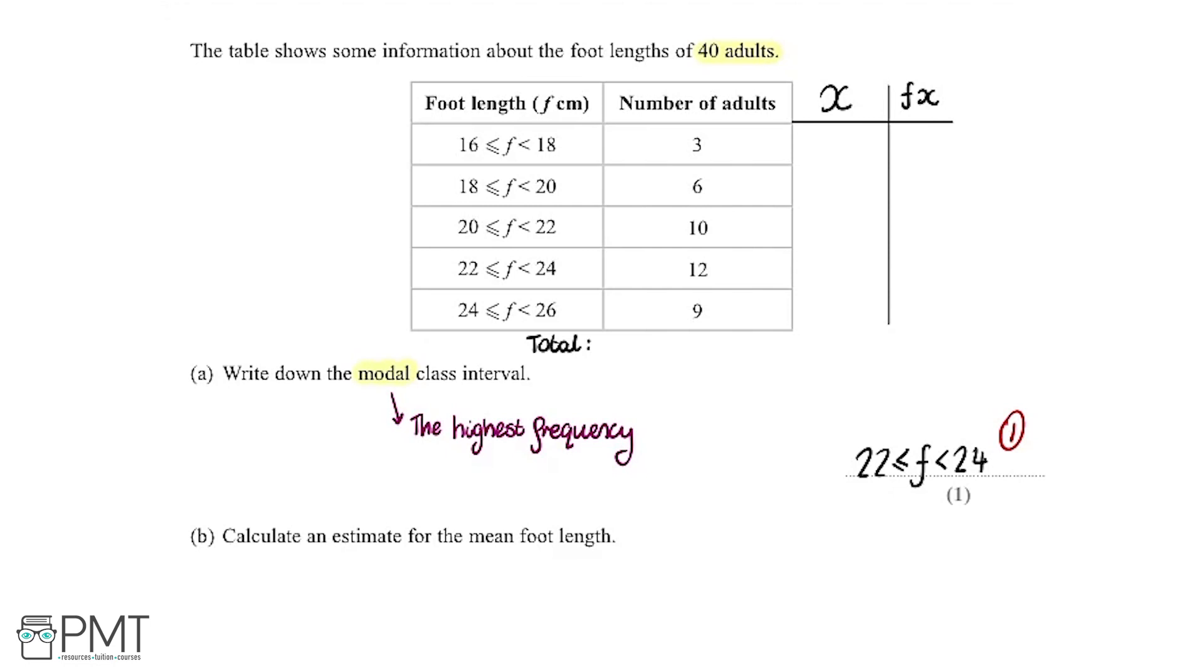The way we work out the mean from a frequency table when we've got grouped data like this is we use the midpoint. We're going to work out the midpoint of all of these groups and I've created a column here where we're going to write them down.